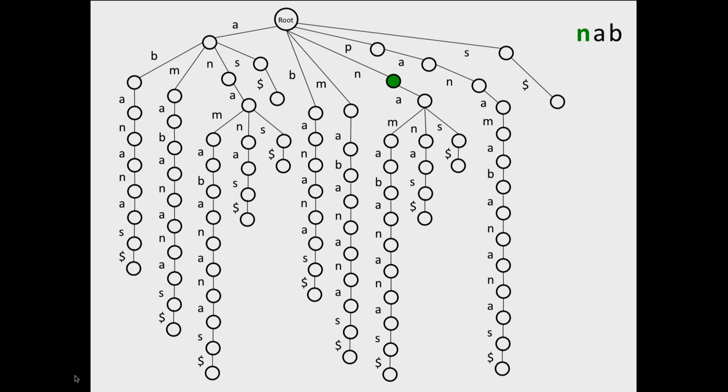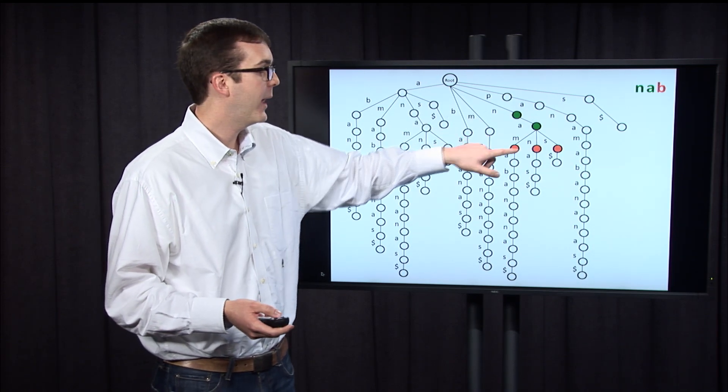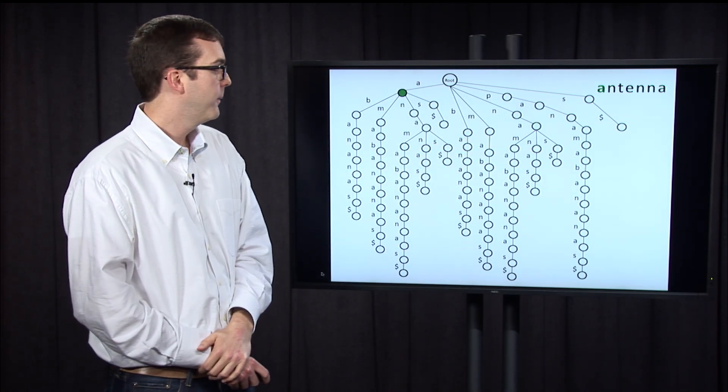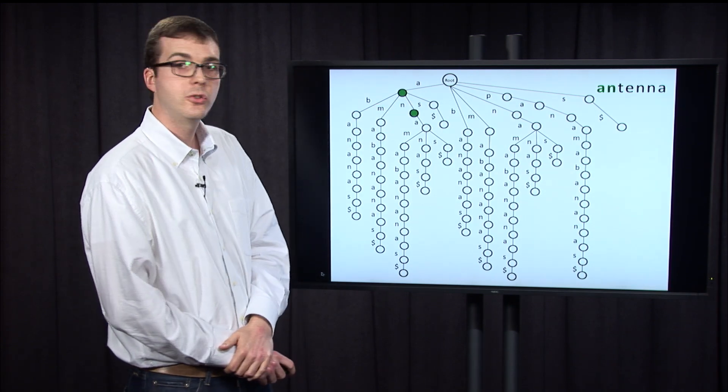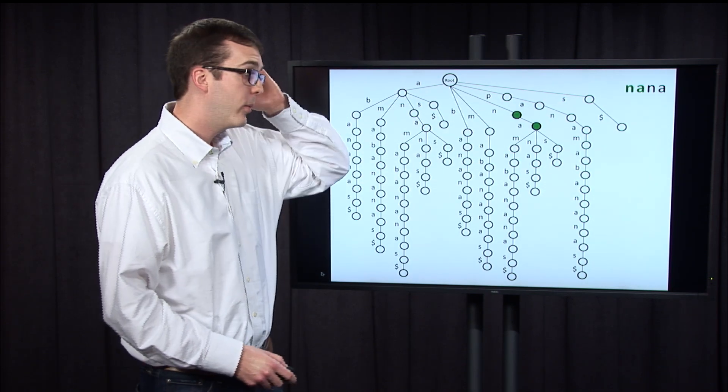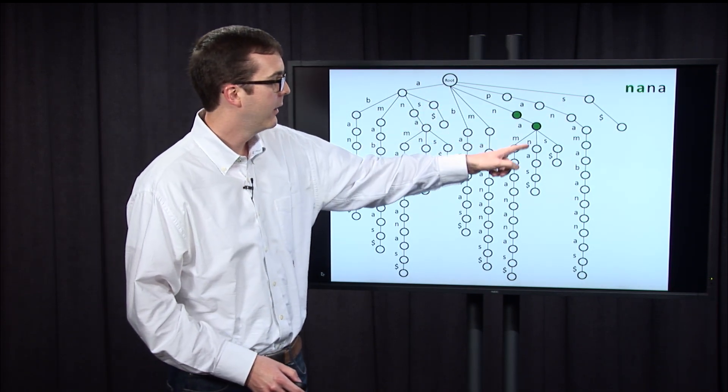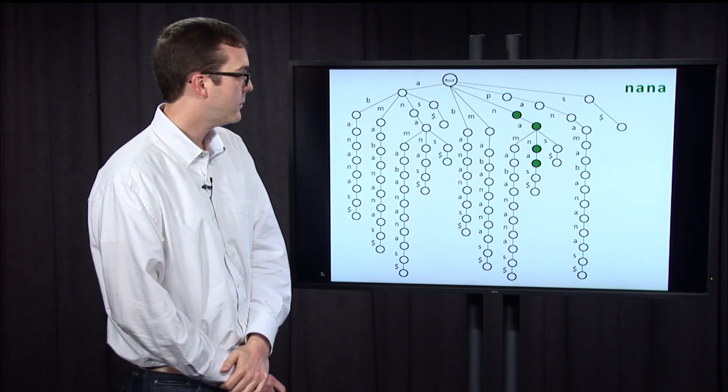Nab is a pattern that we know doesn't occur in Panama bananas. We can match the first two letters following this path, but we're unable to match the third letter. Antenna is another pattern that we know doesn't occur. We can match the first two letters, but again, not the third. And nana is one that we know appears once, so we get to n-a, and then we walk down the path n-a to match nana.